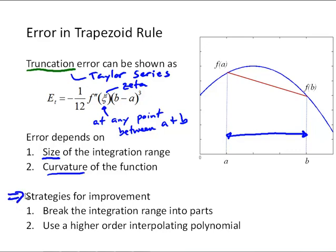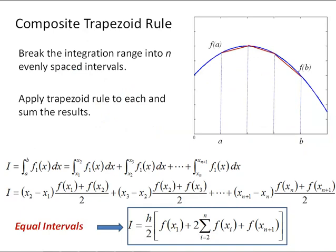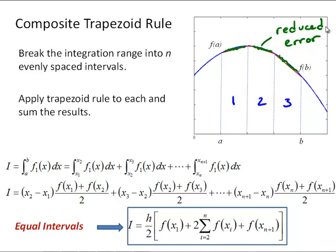This leads to two possible strategies for improvement. One would be to break the integration range into parts to decrease that b minus a term. Another is to use a higher order interpolating polynomial. The composite trapezoid rule is what we get by breaking the integration range into n evenly spaced intervals. In this figure, we've got three intervals giving us three trapezoids. You can see the error — the distance between the straight lines and the curve — is reduced by breaking that up into parts. So what we'll do is apply the trapezoid rule to each of those n parts and sum the results.